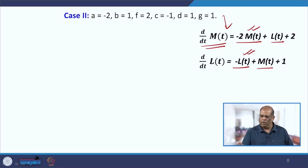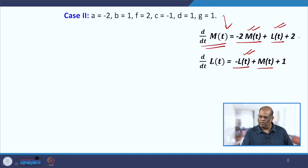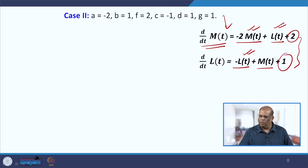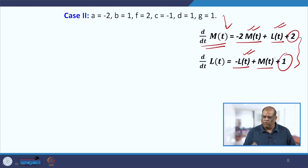However, when there is a reciprocation from the other partner, that love rekindles. Both equations also have a positive appeal term which attracts them toward each other. Let us see what dynamics this gives when we find the eigenvalues.